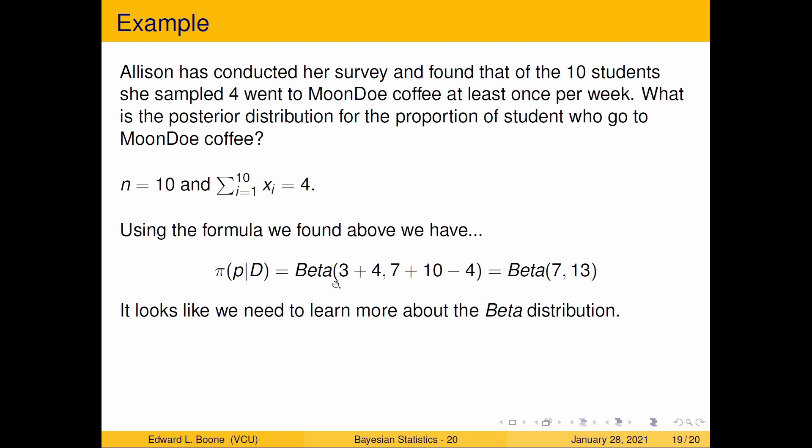Using the formula we had over here, we have that n is 10, and the sum of the xi is 4. So, 3 plus 4, and 7 plus 10 minus 4 gives us a Beta(7,13). This is what the distribution is. Looks like we need to learn more about the beta distribution, which is our next video, by the way.